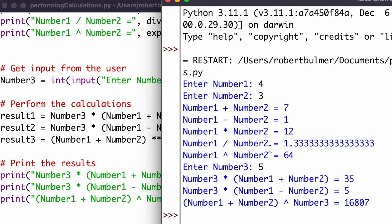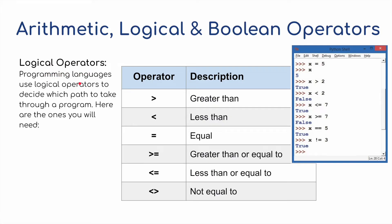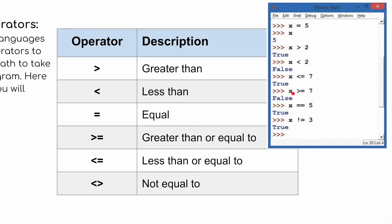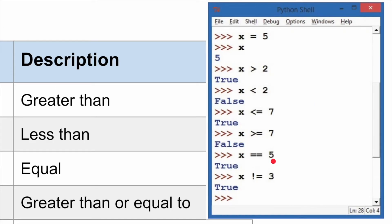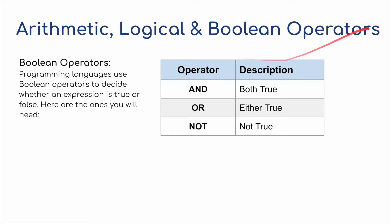Now for logical operators: programming languages use logical operators to decide which path to take through a program. For your IGCSE you need to know: greater than (>), less than (<), equal to (==), greater than or equal to (>=), less than or equal to (<=), and not equal to (!=). In Python, we use double equal sign (==) for comparison and exclamation-equals (!=) for not equal to, since a single equal sign is used for variable assignment.